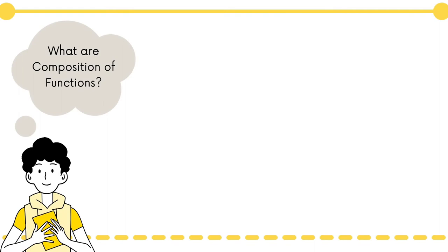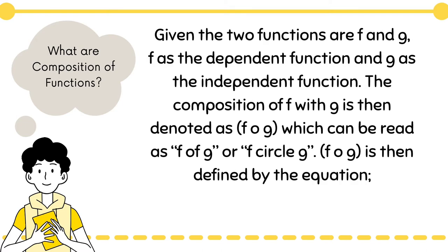Let us define the composition of functions. What are composition of functions? Given two functions f and g, f as the dependent function and g as the independent function, the composition of f with g is then denoted as f of g, or f circle g.